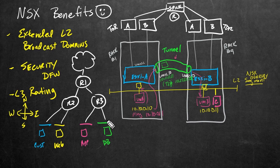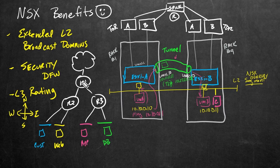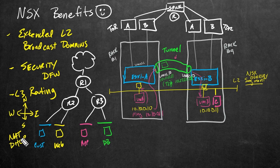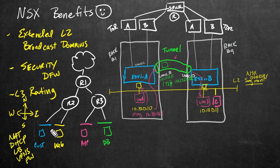For east-west traffic, we can route between those VMs. For traffic that needs to go out to the internet, we can implement north-south routing. In conjunction with these routers — which in an NSX environment are referred to as gateways — we can also implement network services such as network address translation, DHCP, load balancing, VPNs, stateful firewall services, and many more.